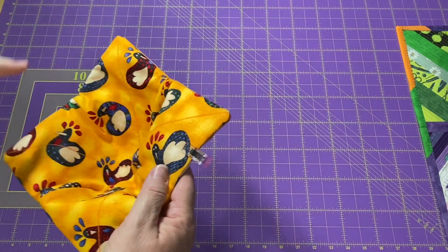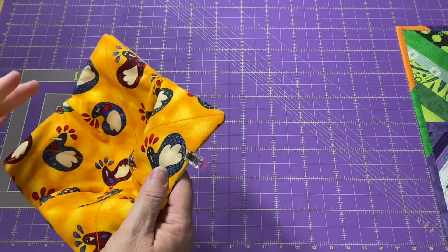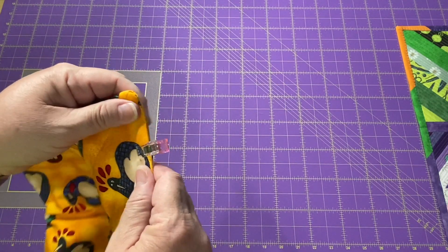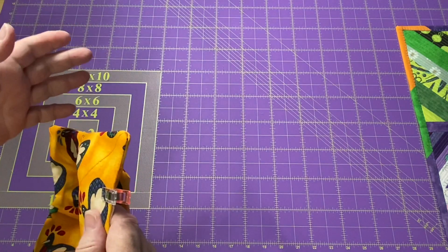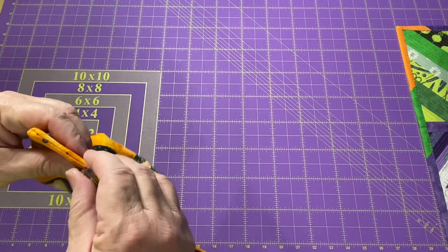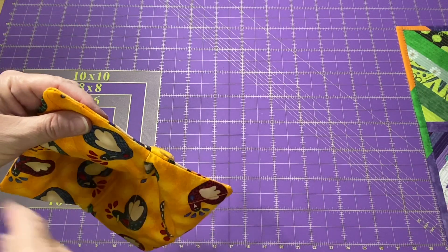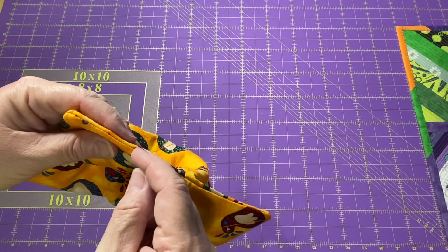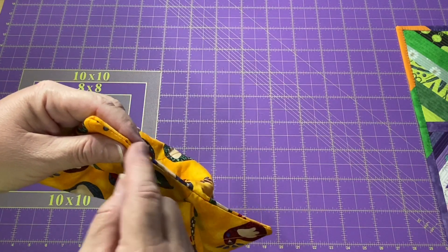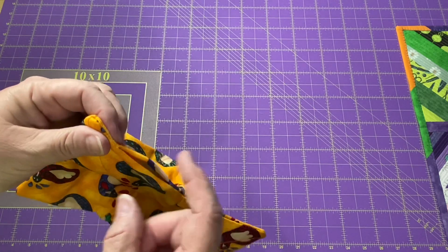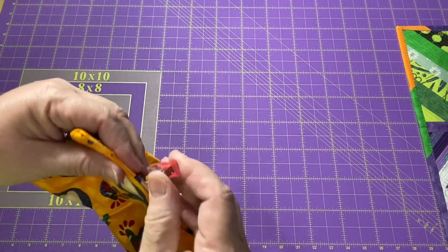Now we're going to go ahead and stitch around this and get it all closed up. You do have a bit of bulk in here so some machines might have a little bit of a problem. If your machine doesn't like stitching through all this, you can just hand stitch this closed right here, your little opening from when we turned it. Hand stitch that closed and that will work.